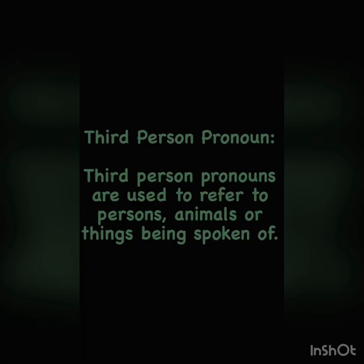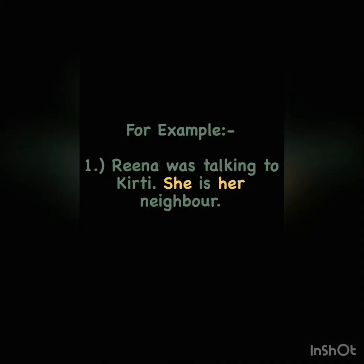Now let's see the third kind. Third person pronouns are used to refer to persons, animals, or things being spoken of — jins logon ke baare mein hum baat kar rahe hote hain kisi doosre person se, woh third person pronoun hote hain. For example: 'Reena was talking to Kirti. She is her neighbor' — reena kirti se baat kar rahi hain aur keh rahi hain ke woh meri neighbor hain. Here we are talking about a third person.